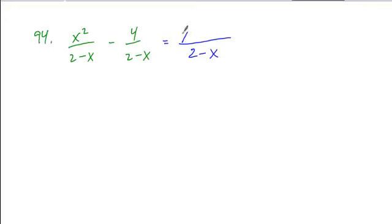We simply combine the terms of the numerator, x squared minus 4. In the numerator, we have the difference of squares, so those can be factored into x plus 2 and x minus 2, the sum and difference of the terms being squared.